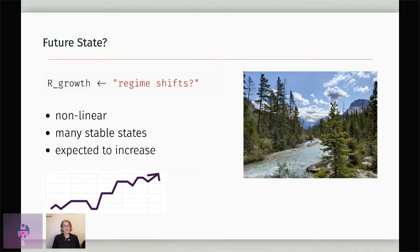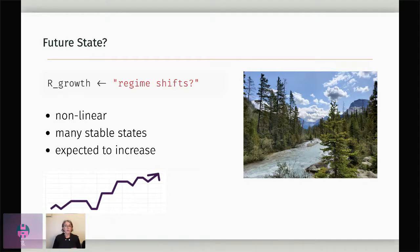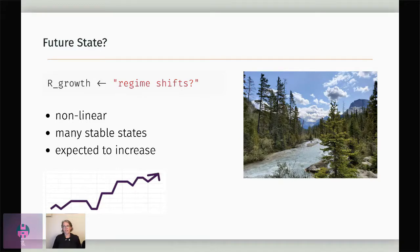I do think regime shifts and the growth of data science skills have some things in common. They're both non-linear — whether it is your own learning plan, supporting a team, or your organization, shifts are rarely linear. Allow yourself to have fast and slow rates, and times of learning and rest along the way — super important for the long-term journey. In the natural world there are often many stable states, and I believe the same can be said for R and data science: if one project is using base R, another tidyverse, another Python, and they're working for your team or organization, those many stable states are okay and expected. And finally, they're expected to increase — shifts in the natural world are expected to increase with a changing climate, and I believe the same can be said for data science and R in the BC public service over the next 10 years.